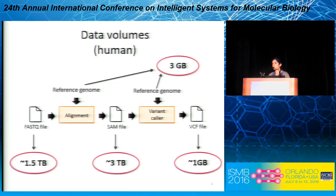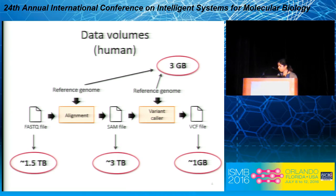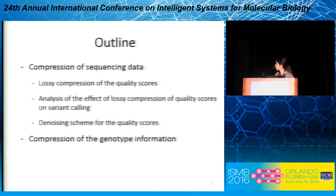The last step is to perform variant calling, because what we care about is the differences between the genome we sequenced and the reference genome. All these variants are stored in a VCF file, which is about one gigabyte. If everything were perfect, we could just store the VCF file. However, because the tools used for alignment and variant calling keep improving over time, most of the time we store the FASTQ and the SAM file so that in the future we can redo the analysis and maybe find variants that were missed the first time.